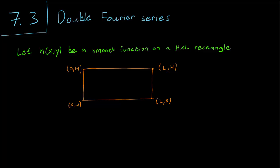So let h be a smooth function in two variables on a rectangle of length L and height H. Smoothness is actually a stronger condition than what we need. It is enough to talk about piecewise smoothness, but I don't really want to discuss what piecewise smoothness means for a 2D function, so let's just let it go.